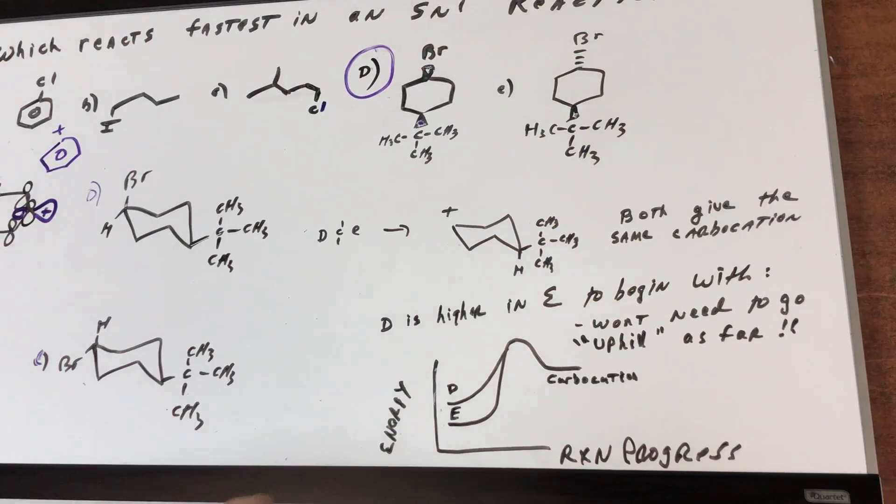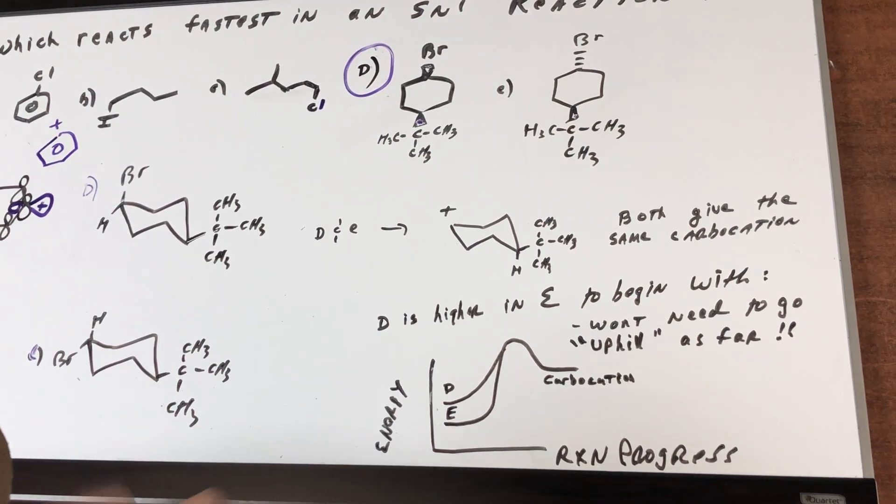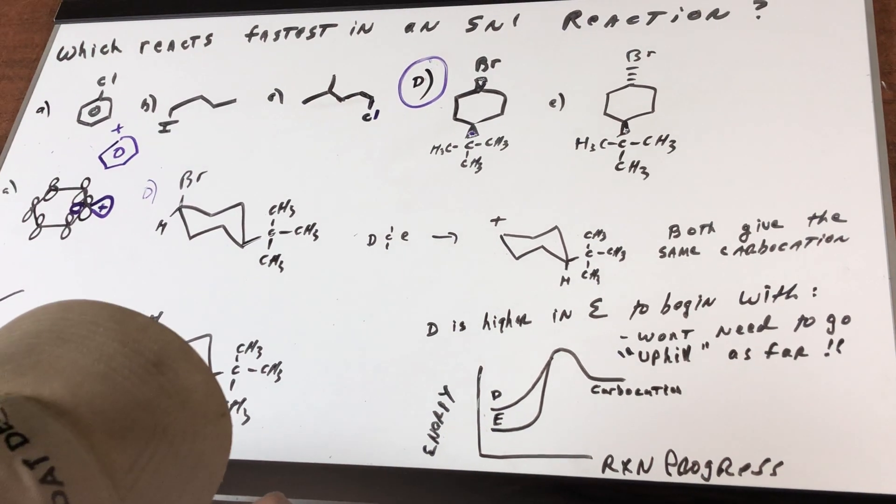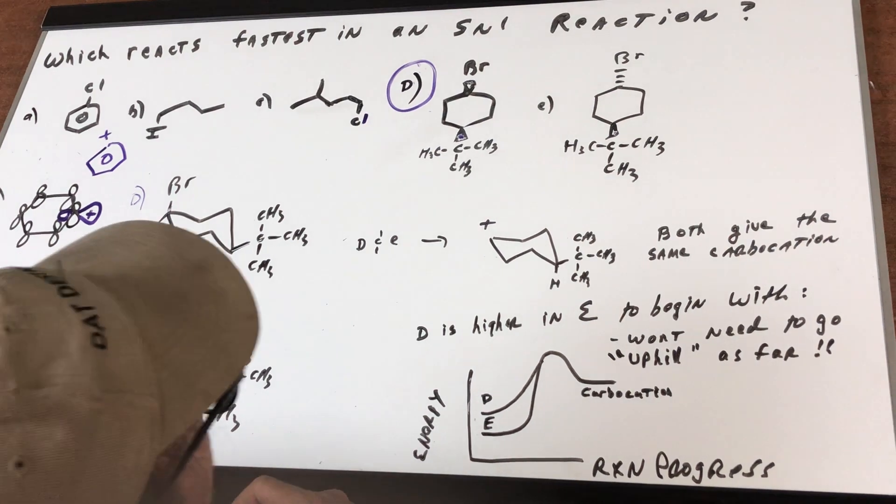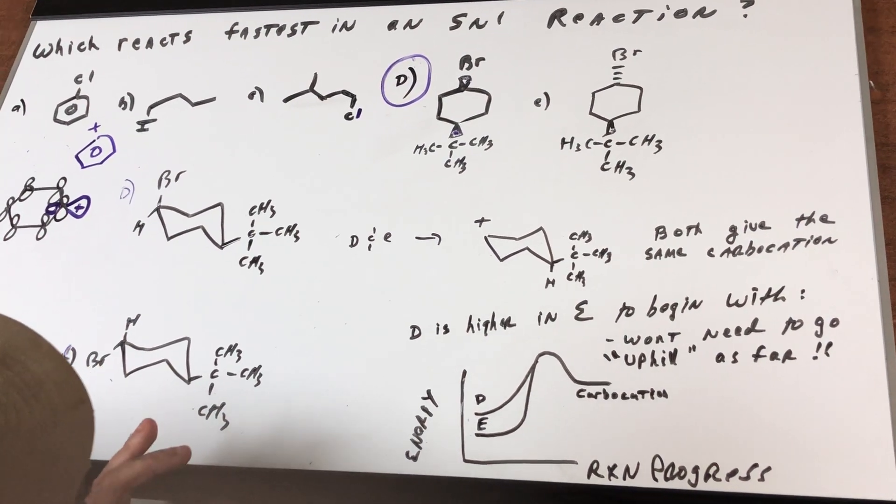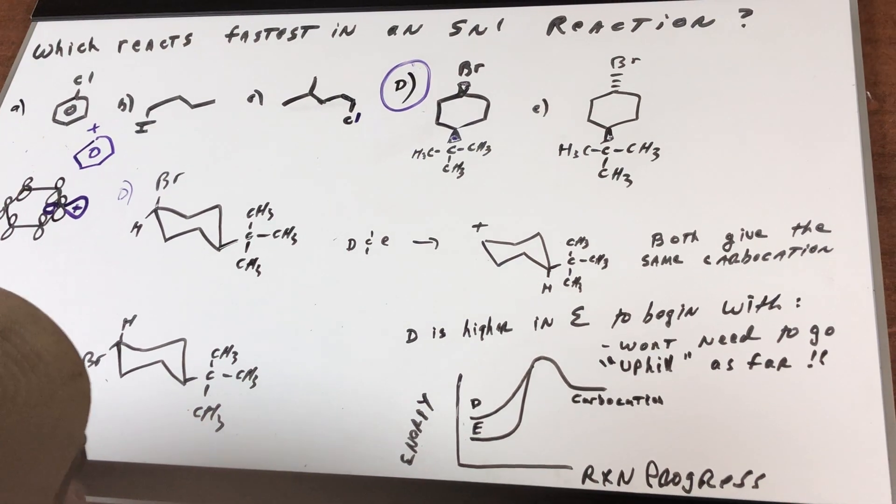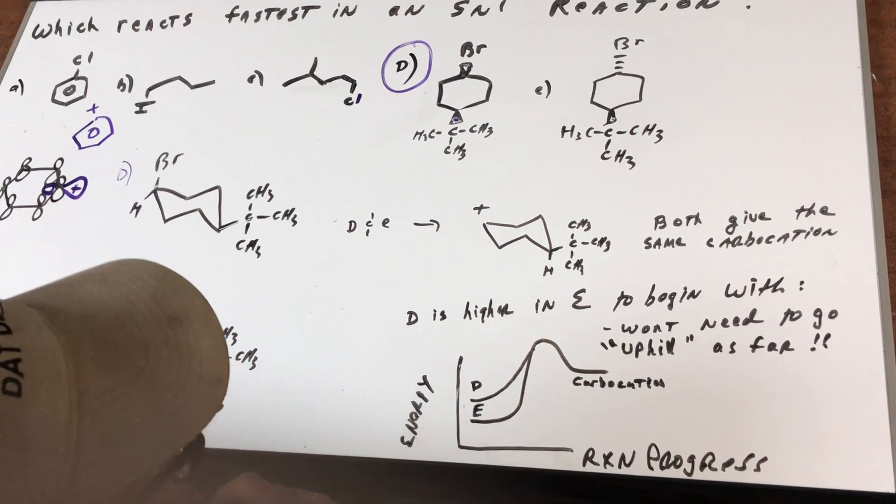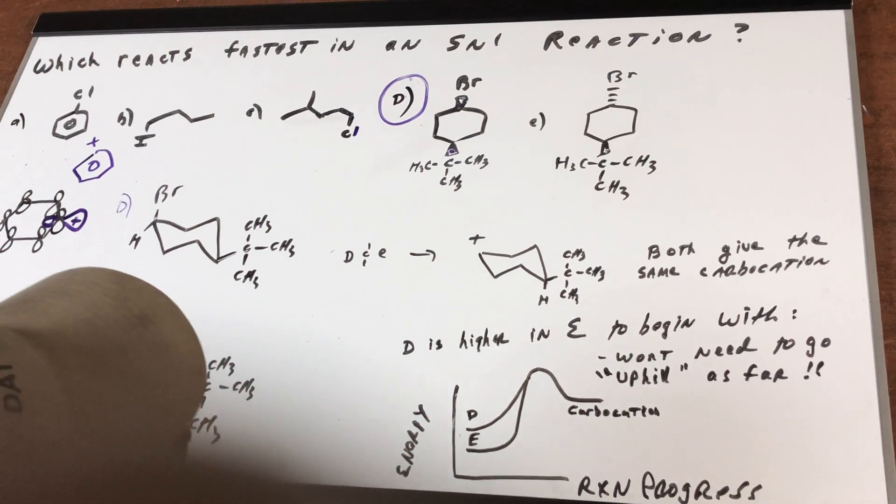So the correct answer would be choice D, in which the bromine is placed in the axial position. I hope this helps and gives you a good understanding of an SN1, SN2 type of question you'll see on the DAT. All right, good day to you, I'll see you in study group, bye bye.